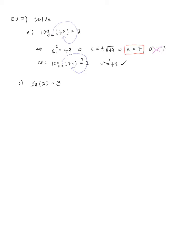Now let's try ln of x equals 3, solve for x. Rewrite as log base e of x equals 3. This is equivalent to e to the third equals x. Since e is a number, x equals e to the third — that's the exact answer.